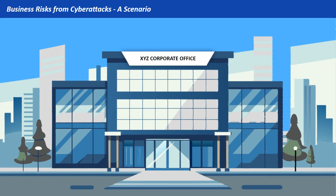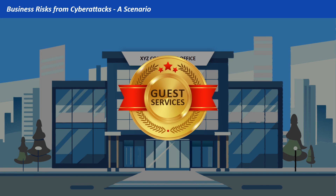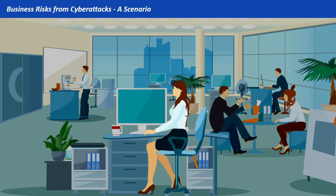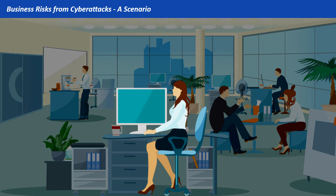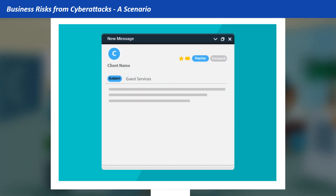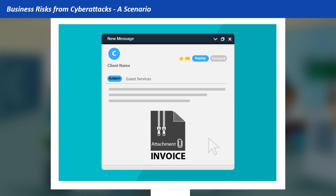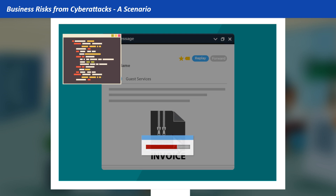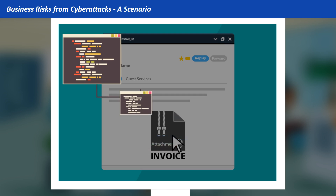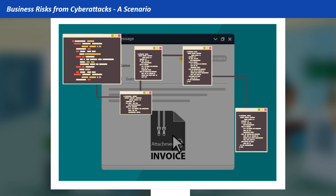Let's explore a scenario at XYZ corporate office, a luxury destination known for its outstanding guest services. The story begins with Sarah, the front desk manager, who receives an email that looks like it's from a trusted client. Inside, there is an attachment labeled as 'Invoice.' Unaware of the danger, Sarah opens the attachment, which triggers a malicious script. This script quietly installs ransomware on her computer, starting a chain of events that will soon impact the entire office.